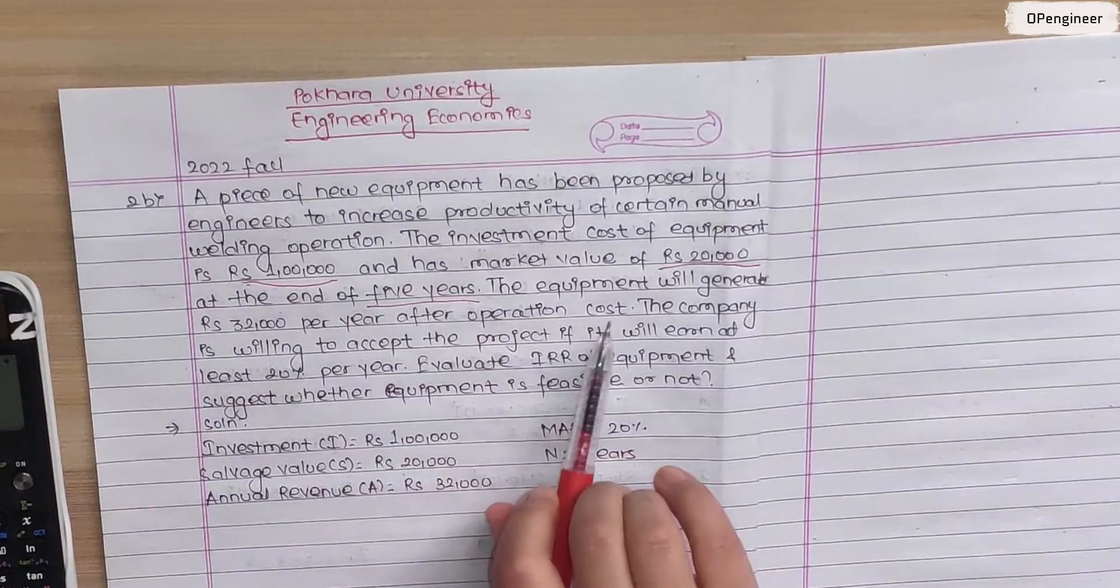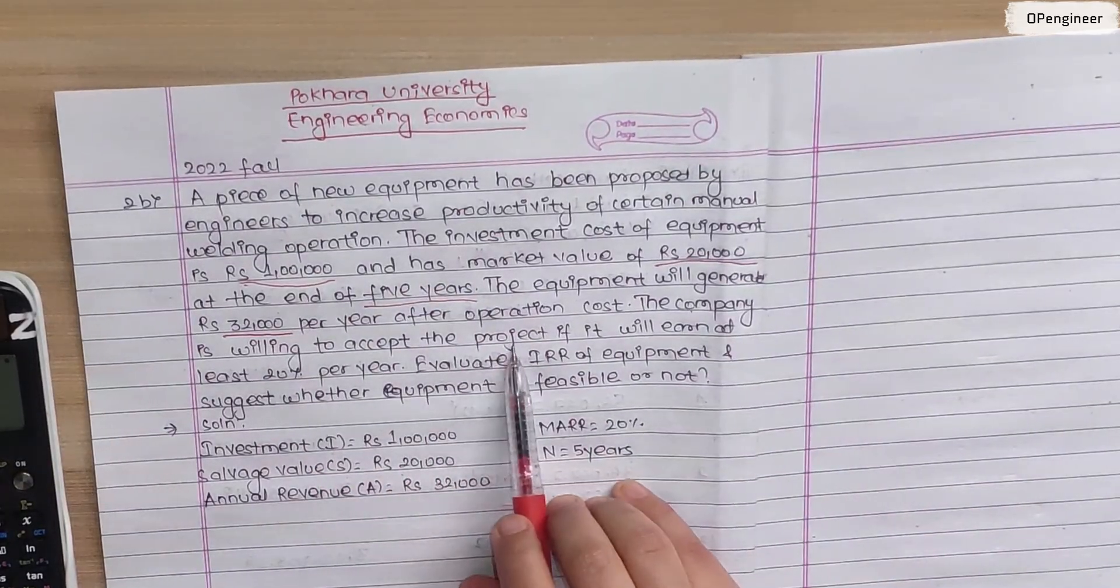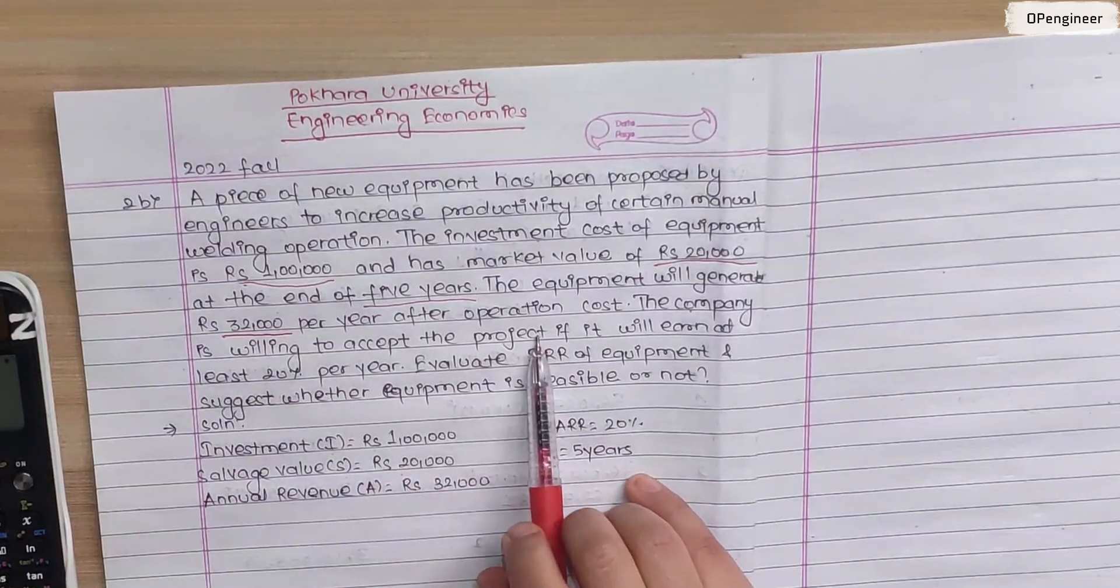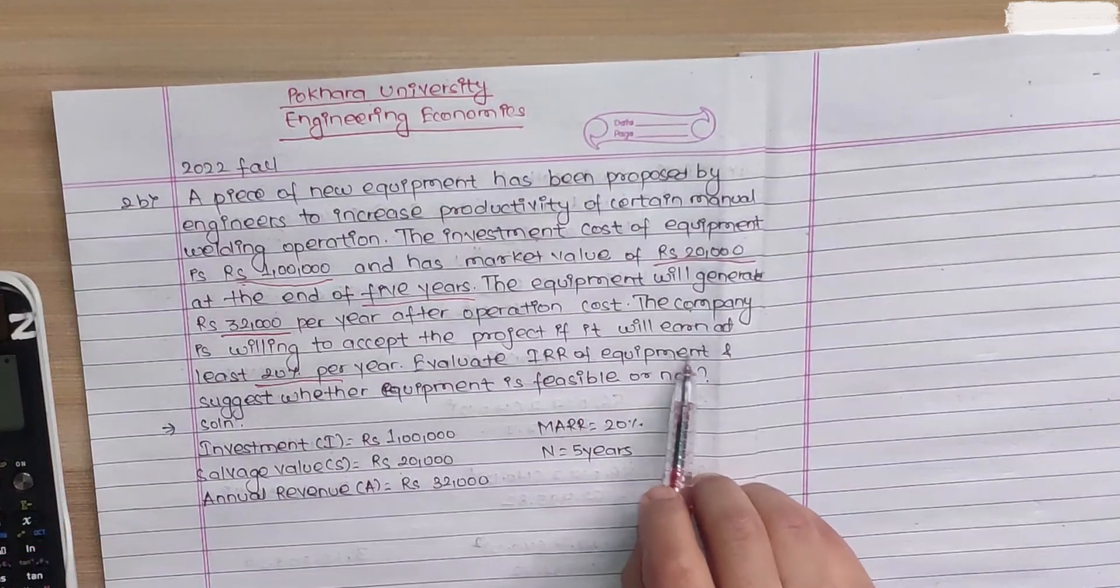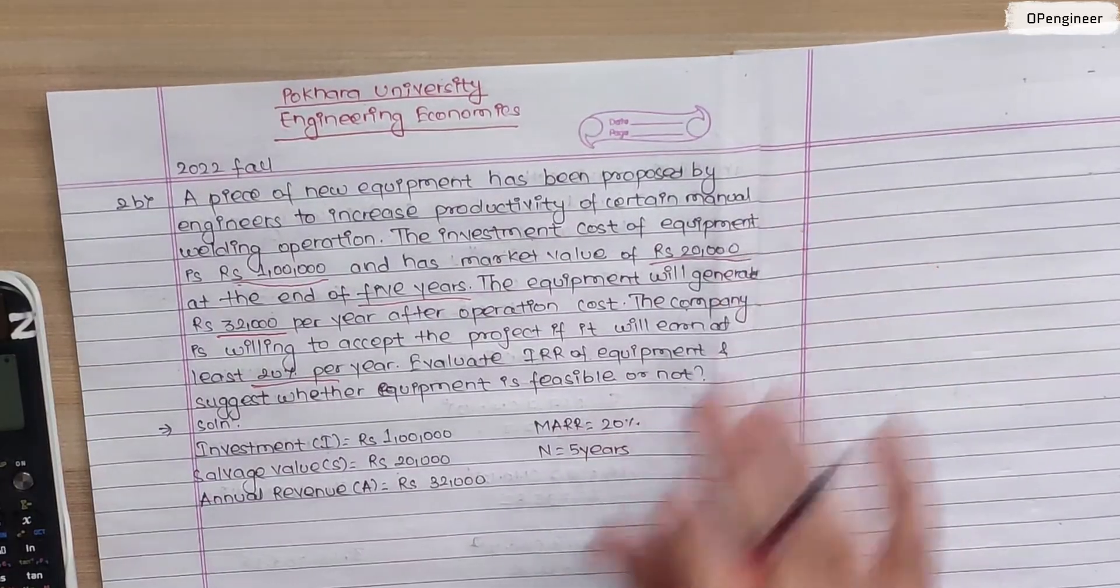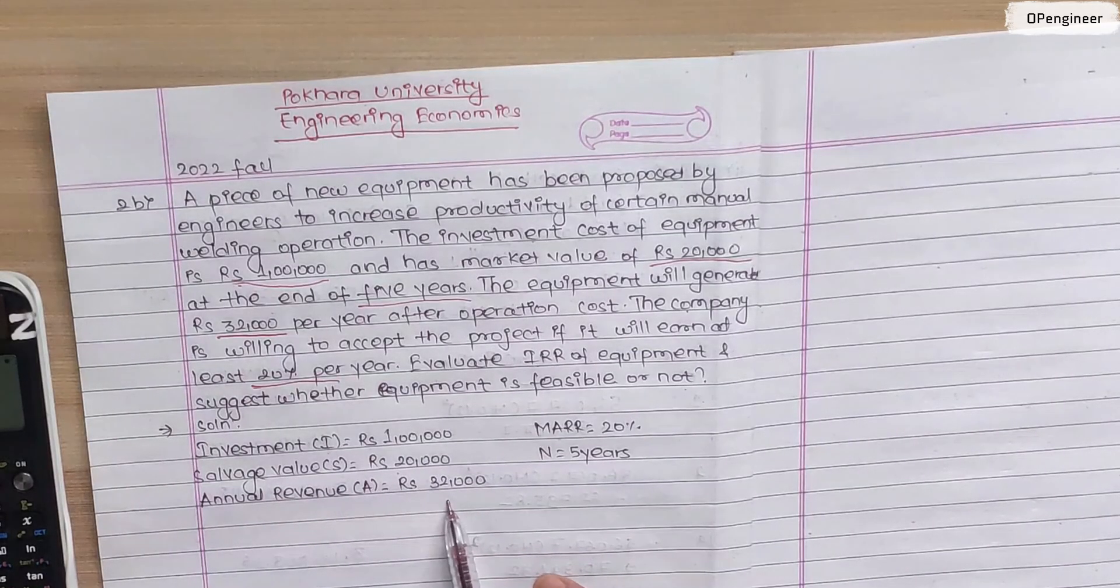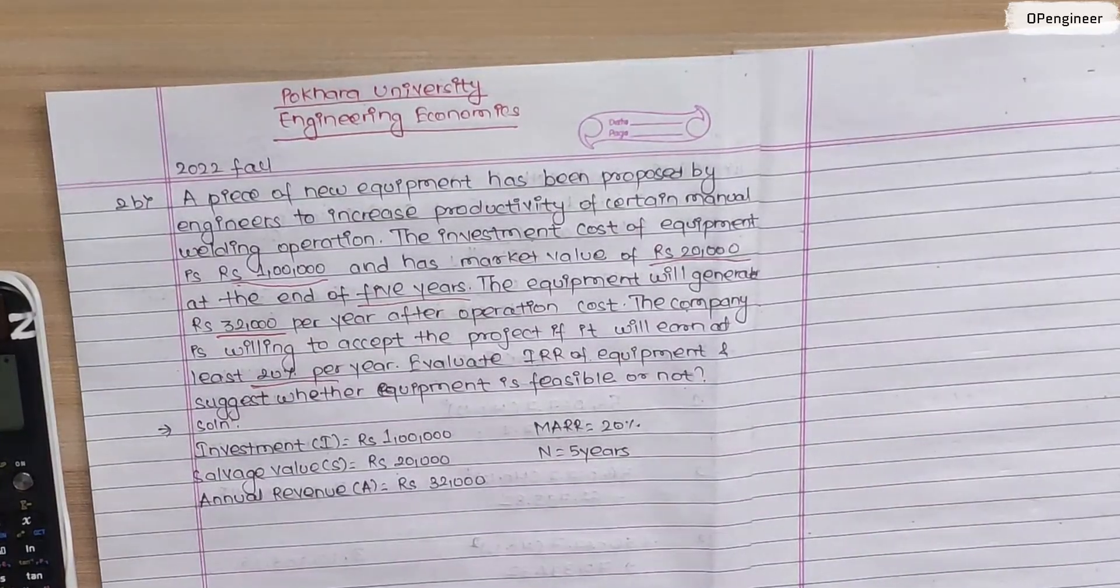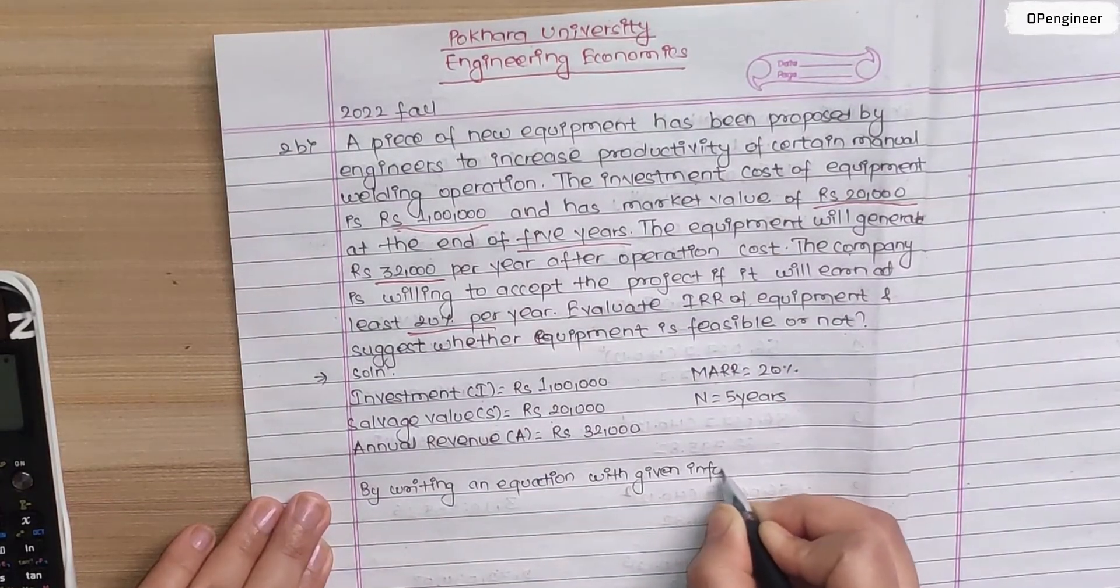The equipment will generate rupees 32,000 per year after operation cost. The company is willing to accept the project if it will earn at least 20 percent per year. Evaluate IRR of the equipment and suggest whether the equipment is feasible or not. Given data: investment one lakh, salvage value 20,000, annual revenue 32,000, required rate 20 percent, number of years is five years.